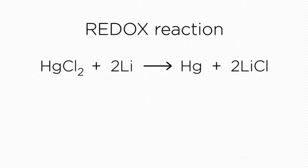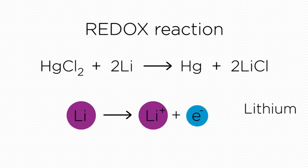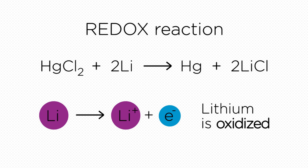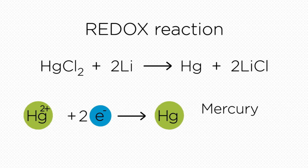Let's take a closer look at what happens to the two metals. Lithium gives up one electron to form lithium plus. This means the lithium is oxidized. At the same time mercury Hg collects two electrons to make mercury metal.